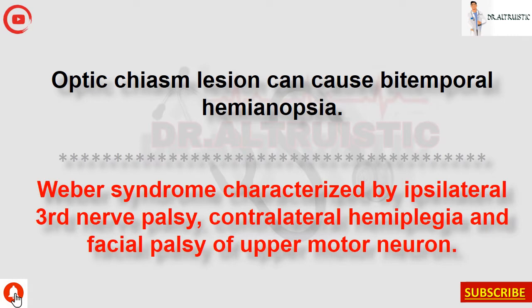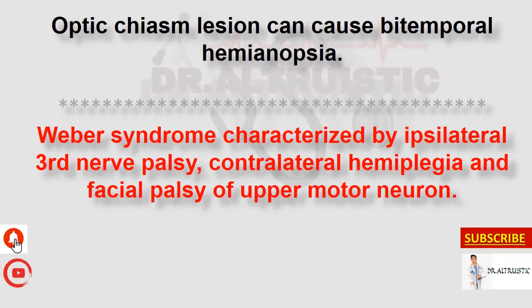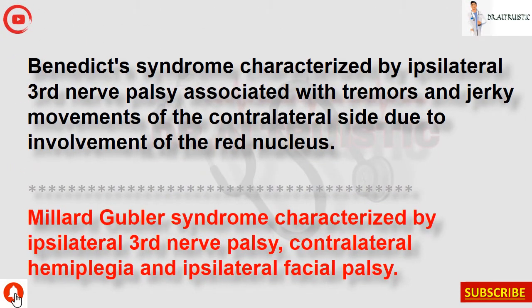Weber syndrome is characterized by ipsilateral third nerve palsy, contralateral hemiplegia, and facial palsy of upper motor neuron type. Benedict's syndrome is characterized by ipsilateral third nerve palsy associated with tremors and jerky movements of the contralateral side due to involvement of the red nucleus. Millard-Gubler syndrome is characterized by ipsilateral third nerve palsy, contralateral hemiplegia, and ipsilateral facial palsy.